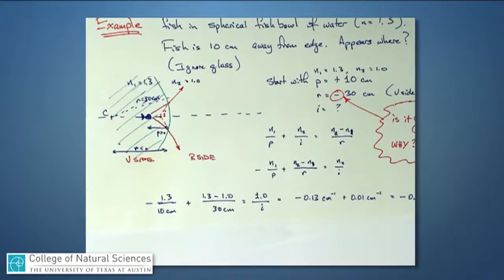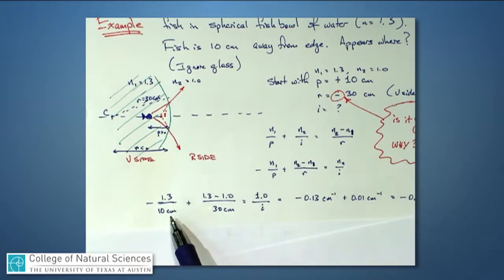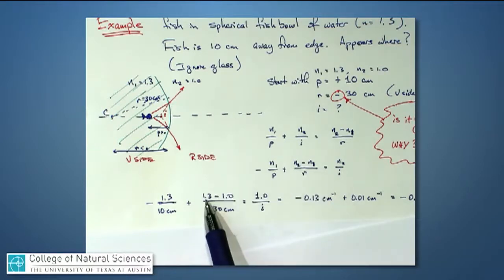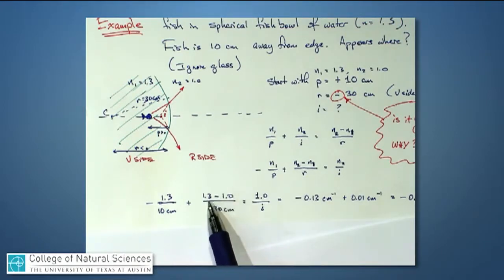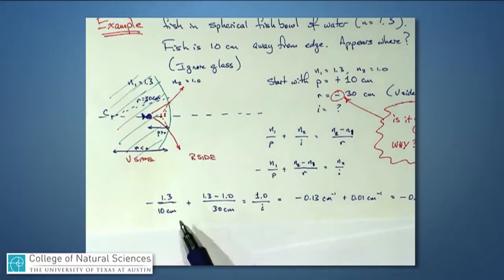Plugging in numbers: for n1 I have 1.3 over p. P is always a positive number — that's 10 centimeters — but there's a minus sign in front because of the rearrangement. Then I add (n2 − n1)/R: that's 1.3 minus 1.0 divided by positive 30 centimeters, because R is negative so the minus sign goes into the numerator. That has to equal n2/I, where n2 is 1.0 and I is the unknown.